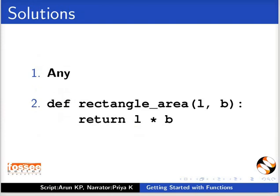And the answers: First, any number of arguments can be passed to a Python function. Second, we can write a function to find the area of a rectangle as def rectangle_area inside brackets l comma b colon return l asterisk b.